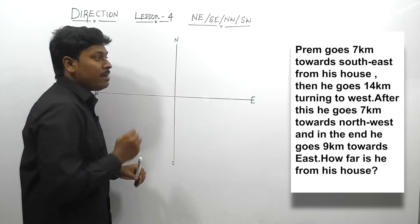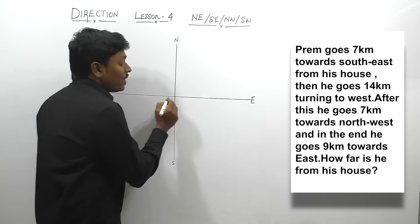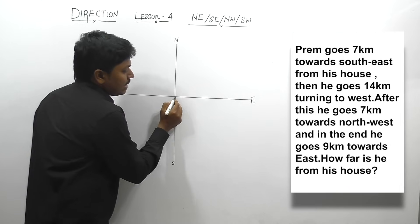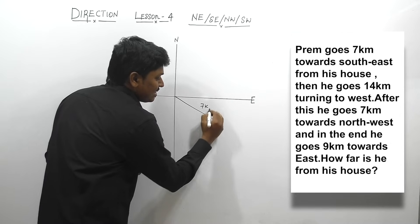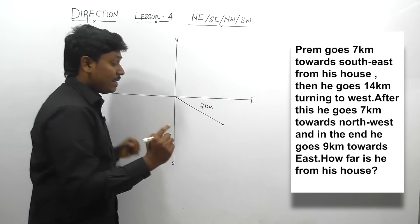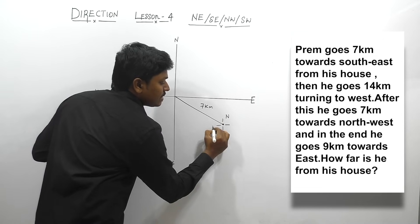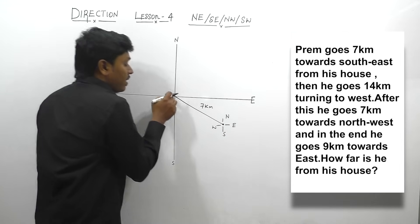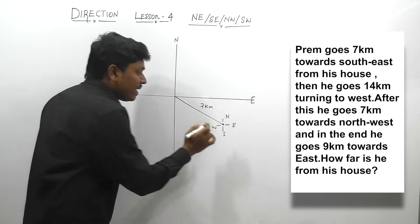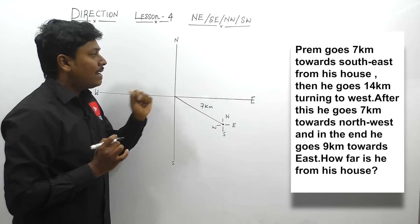Prem goes 7 km towards south-east. So from the starting point, Prem is going 7 km towards south-east. We know that south-east will be this side and he is covering 7 km. After reaching this point, just draw a small direction like this — north, south, west and east.